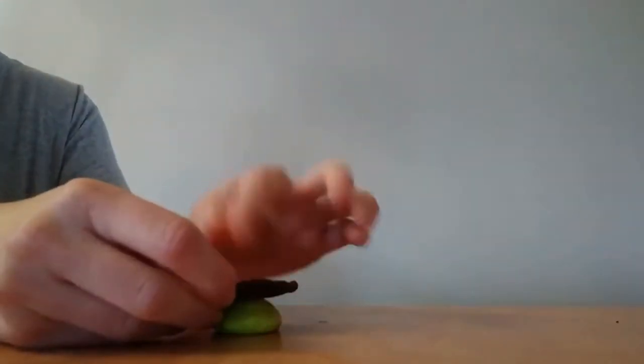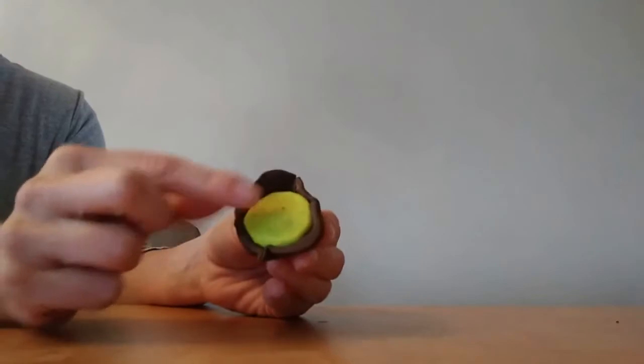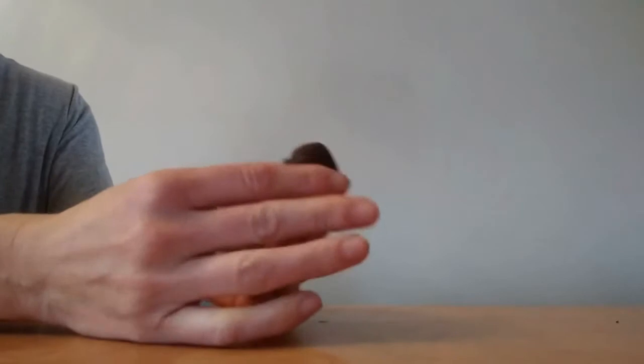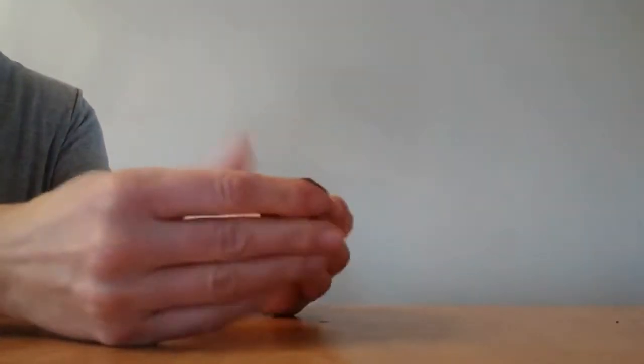Then you're going to drape it over your base like this. And with the excess pieces, you're going to wrap it. Kind of spread it so it covers the entire turtle shell.